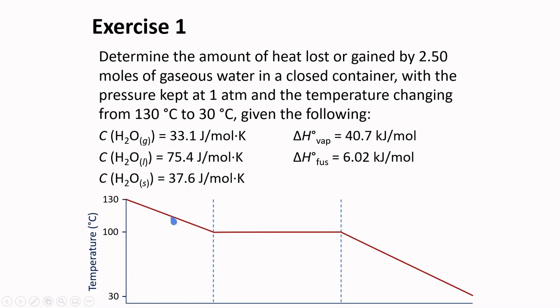We could illustrate this change using this cooling curve. The starting temperature is at 130 degrees Celsius. Here, only water vapor is present. As heat is removed from the system, the temperature will cool down to 100 degrees Celsius. Here, the temperature will remain constant until all the water vapor is converted to liquid. When this transformation has finished, the temperature will go down again until the final temperature of 30 degrees Celsius is reached. Thus, we can have three stages.